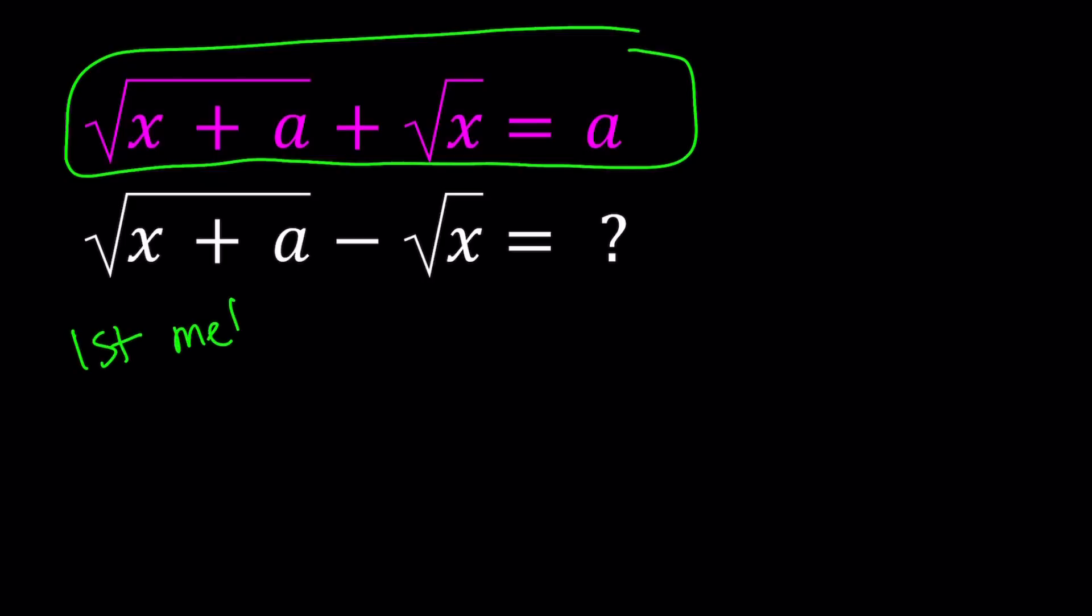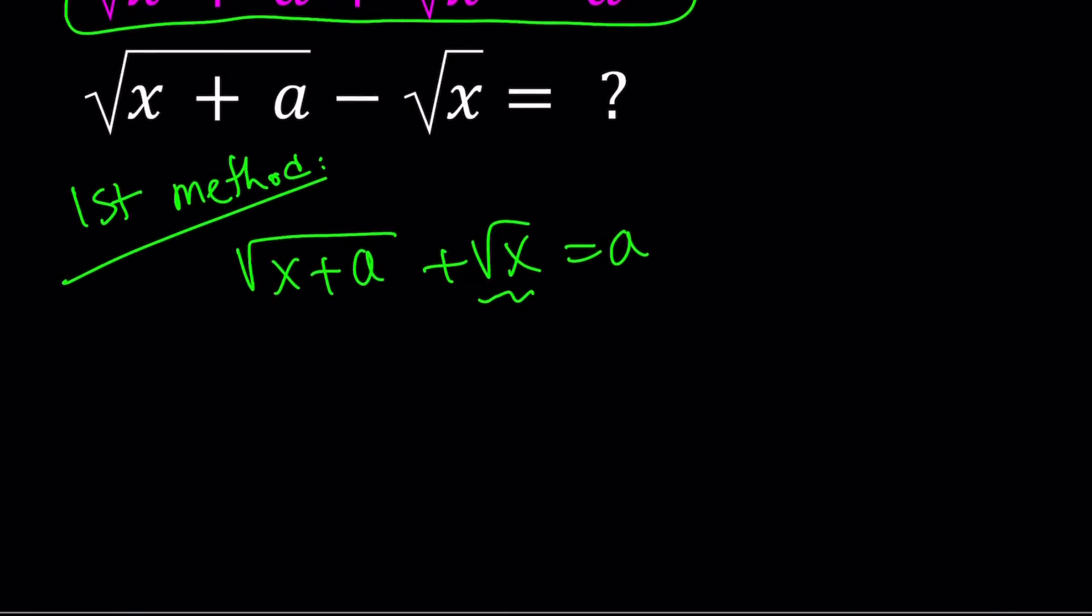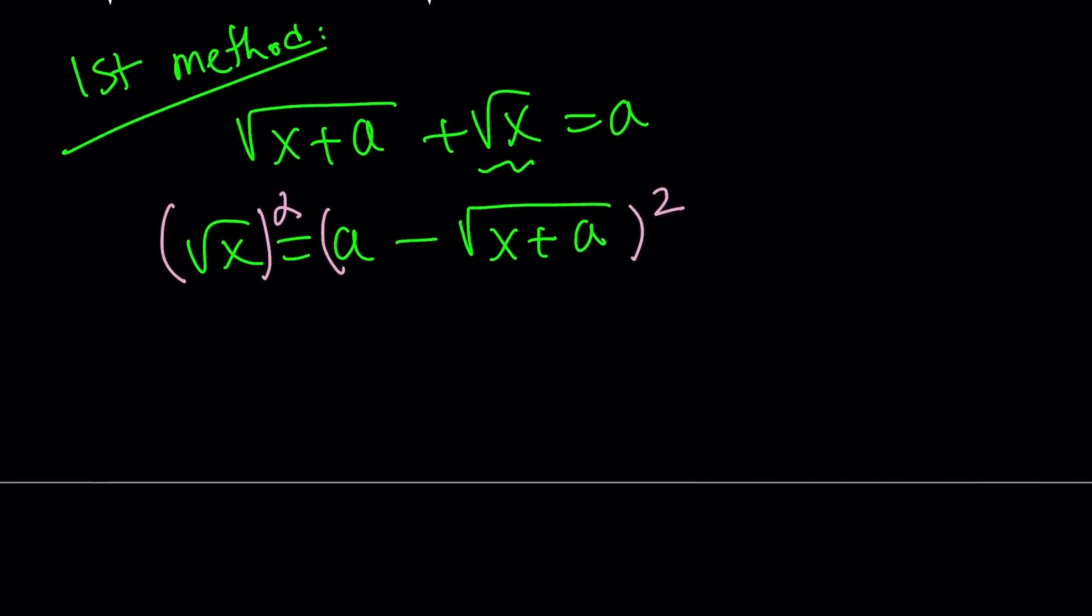First method. Alright, so here's what I'm going to do for my first method. We write the original problem. And I would like to isolate the square root of x. Square root of x can be written as a minus the square root of x plus a. And then square both sides. That should be straightforward because we do this with radical equations.